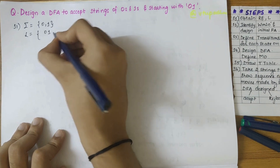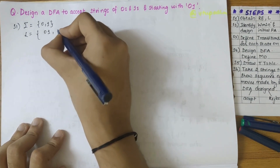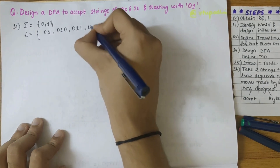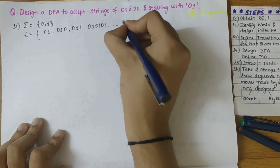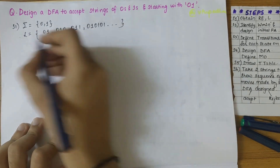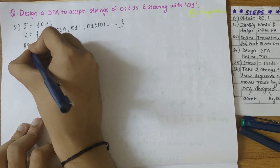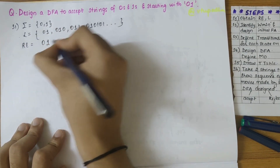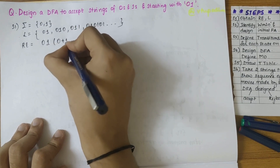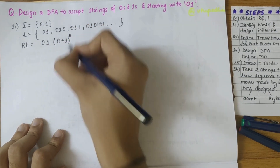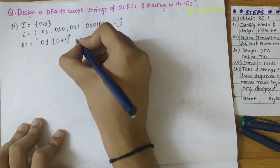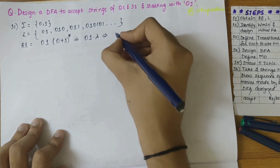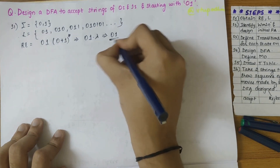The string could be zero-one itself, or zero-one-zero, or zero-one-one, or zero-one-zero-one-zero-one — anything. From this language set, we can obtain the regular expression: it has to start with zero-one followed by anything comprising of zeros and ones. This can be written as zero-one concatenated with (zero plus one)*, and with lambda having no value, we get zero-one.